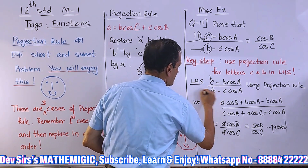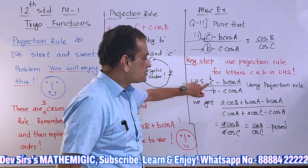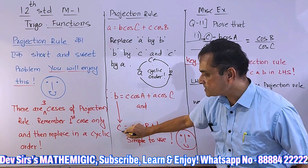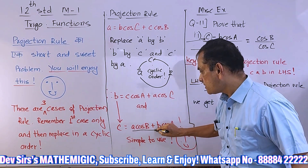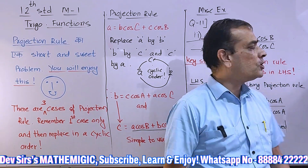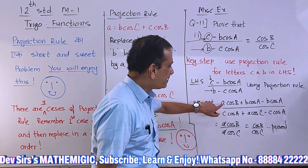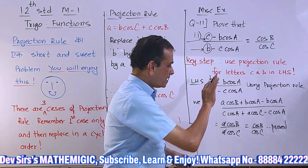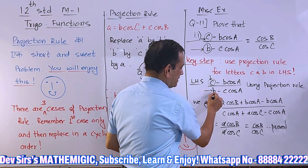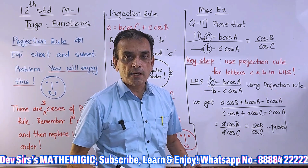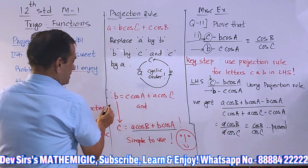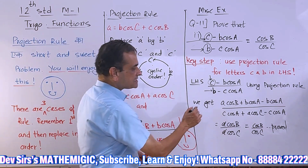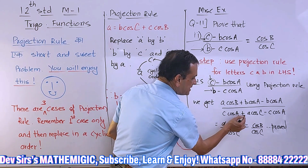Let's see — left hand side is (c − b cos A) / (b − c cos A). Now, which case of projection rule applies? Third case: the value of c = a cos B + b cos A. Just put that value in the numerator. For the denominator, use projection rule for b: b = c cos A + a cos C. Replace b by c cos A + a cos C.